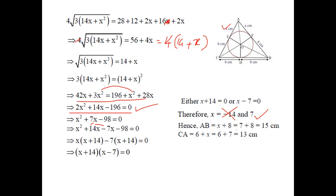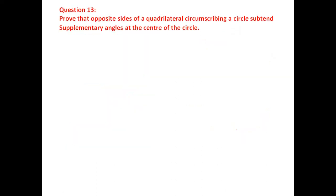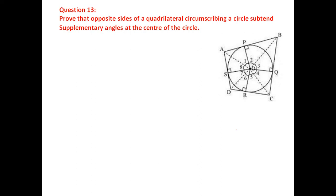Question 13, the last one in this chapter: prove that the opposite sides of a quadrilateral circumscribing a circle subtend supplementary angles at the center. ABCD is the quadrilateral and each side is a tangent to the circle. Join the points of contact and vertices to the center O, creating angles labeled 1 through 8.